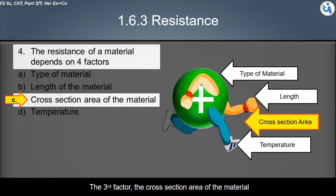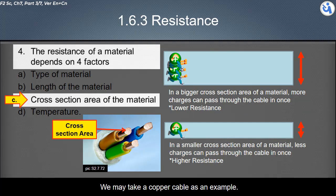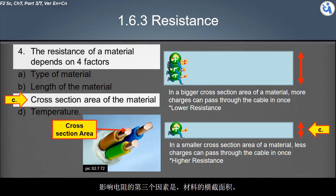The third factor is the cross-section area of the material. We may take a copper cable as an example. If the cross-section area increases, more charges can pass through at once, so it has lower resistance. If the cross-section area decreases, fewer charges can pass through, so it has higher resistance.